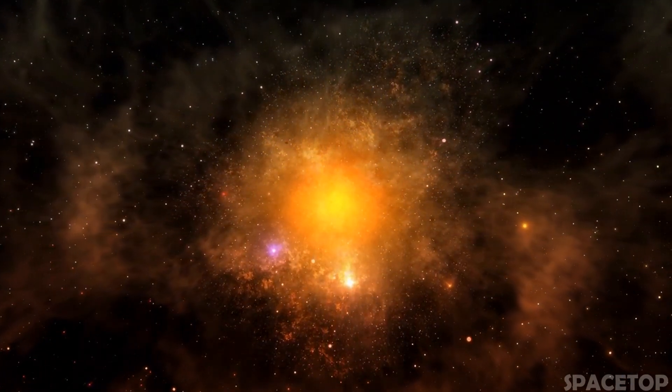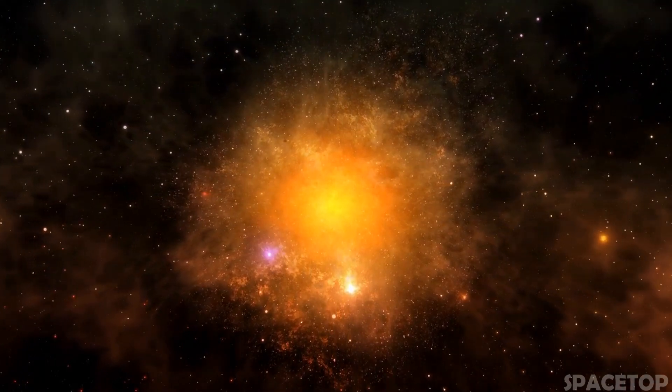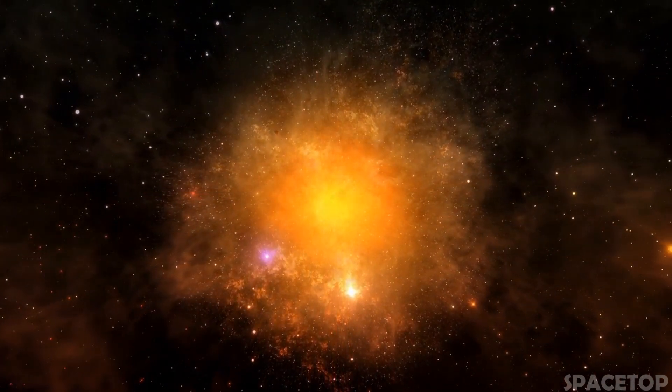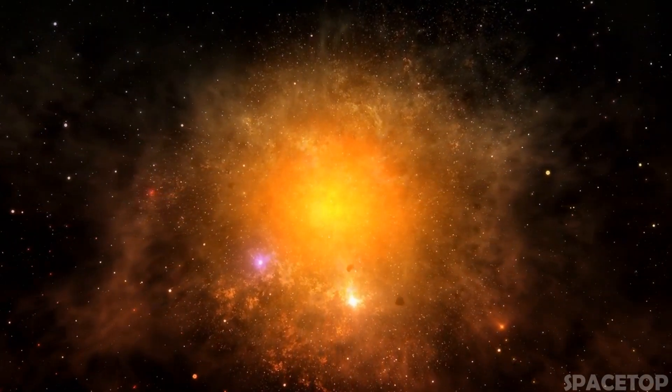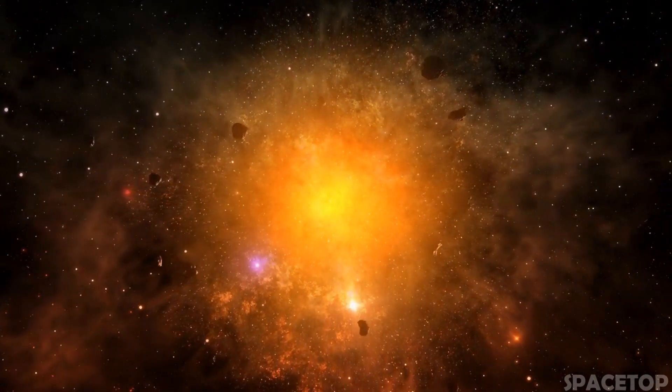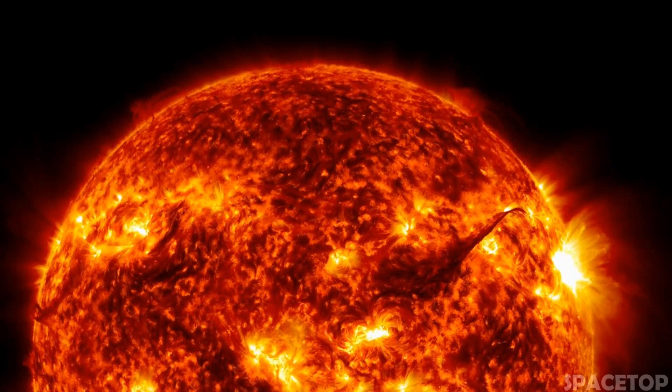The star begins to expand, its radius also grows, and the temperature of the outer layers drops. In this case, the object turns into a red giant or subgiant. Eventually, the star sheds its outer layers, and what remains is a white dwarf shrouded in a planetary nebula.